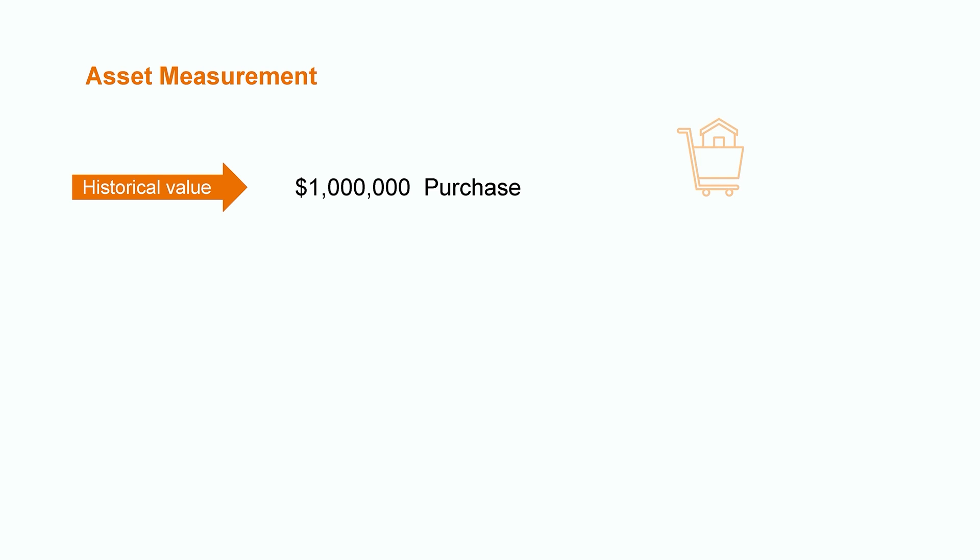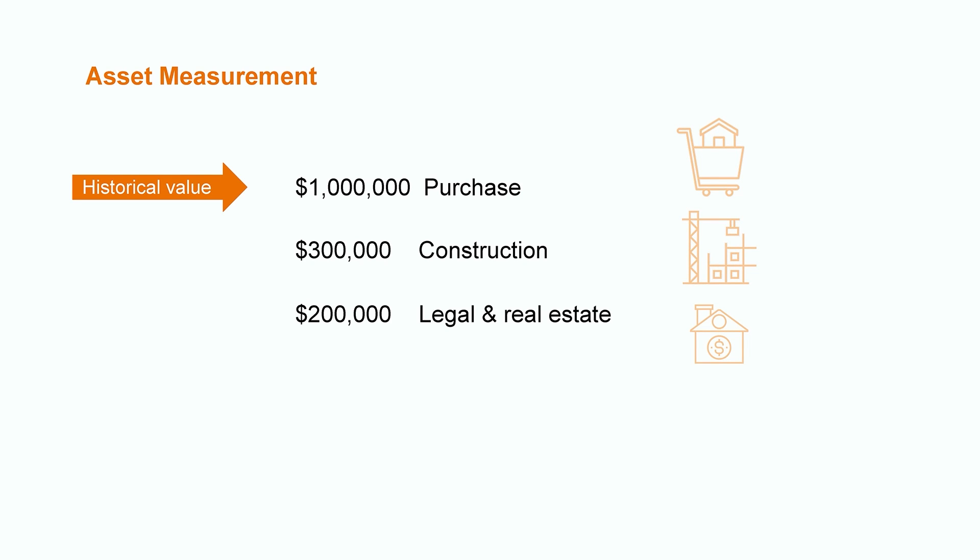Let's go back to the earlier example and assume the marketing company decided to buy a brand new office building instead of doing the renovation. They spent $1 million on the purchase price, plus an additional $300,000 on construction to bring the building ready for use in the business, and another $200,000 on legal and real estate brokerage fees. The accounting rules allow us to include many of the startup costs incurred to bring the asset ready for use. That brings us to a total initial measurement of $1.5 million, which is the value we report as the asset on the company's balance sheet.